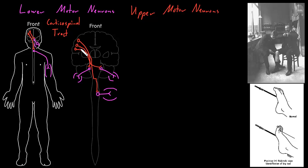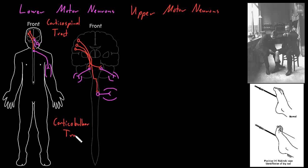This tract carrying upper motor neuron axons to lower motor neurons in the brain stem gets a different name from the corticospinal tract, since we're not going to the spinal cord. It still starts at the cerebral cortex, but goes to the brain stem — which used to be called the bulb — so we call it the corticobulbar tract. This includes upper motor neuron axons innervating lower motor neurons in the brain stem. Because the wiring is more complicated there, we can get different patterns of weakness with abnormalities of this pathway.